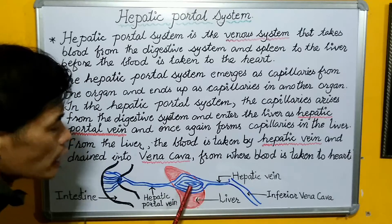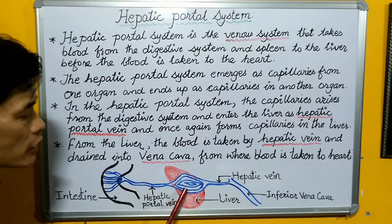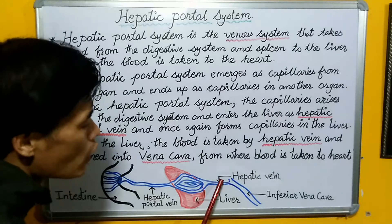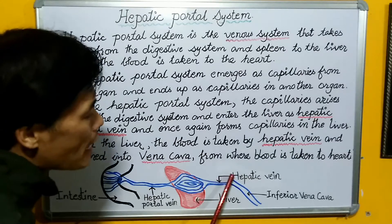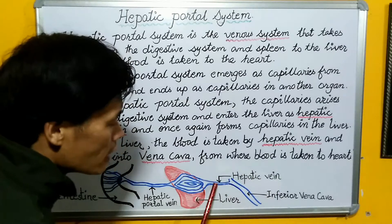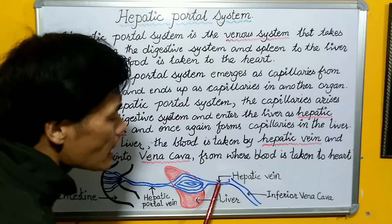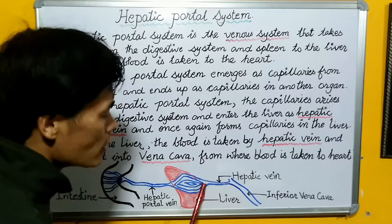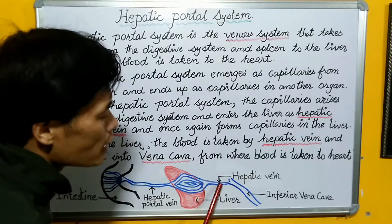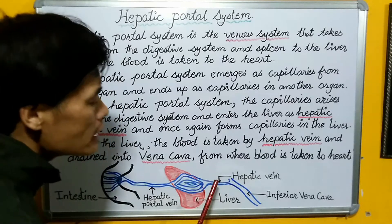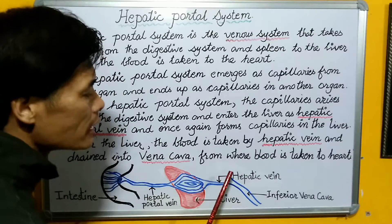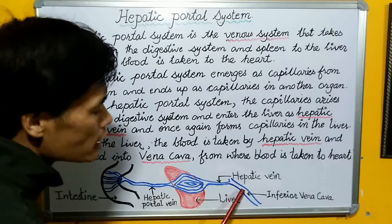These capillaries once again reunite to form the hepatic vein. This is the hepatic vein coming out from the liver, and this hepatic vein ultimately drains the blood into the vena cava.